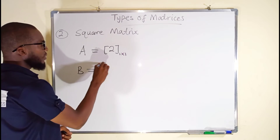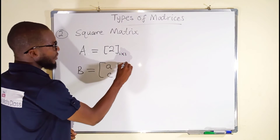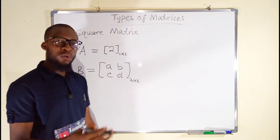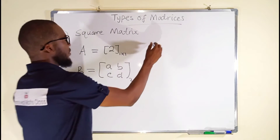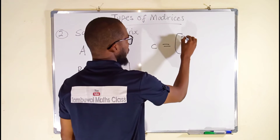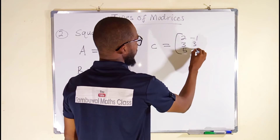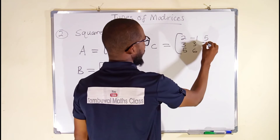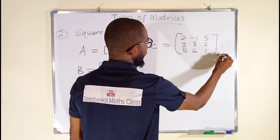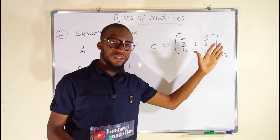Another example: if you have [A, B; C, D], this is a square matrix because it is two by two — it has two rows and two columns. If we have a matrix [2, 3, 5; -1, 3, 6; 5, 2, 1], you can see this is a three-by-three matrix. It is also a square matrix because it has three rows and three columns.